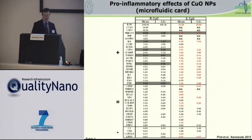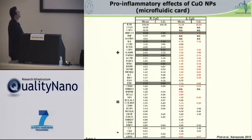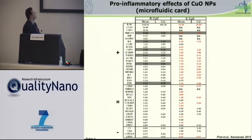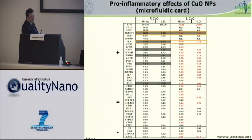Next, we wanted to determine the potential pro-inflammatory effect of these nanoparticles at the transcriptional level using microfluidic cards. We detected overexpression of several mRNAs coding for proteins implicated both in immune and inflammatory response — for instance, overexpression of heme oxygenase-1, confirming the pro-oxidant effect of nanoparticles, and also interleukin-8.